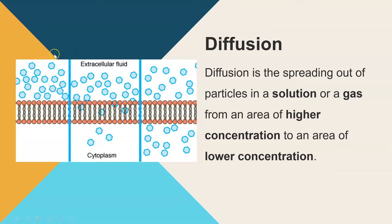We can see here we've got a high concentration of particles on one side of the membrane and they diffuse or move across the cell membrane to where there is a lower concentration. This movement happens until you reach equilibrium, which means you've got the same concentration on both sides or in all locations.